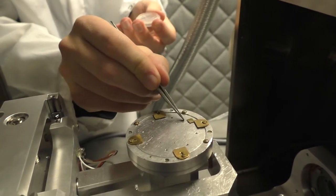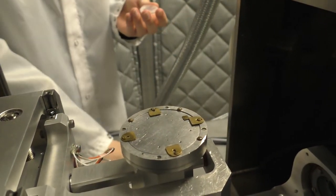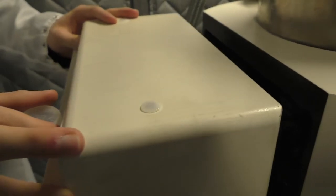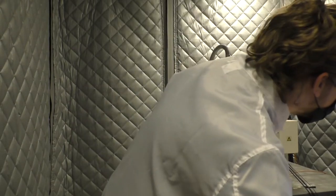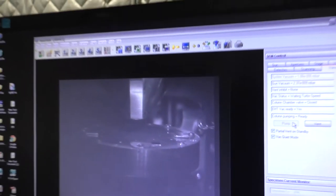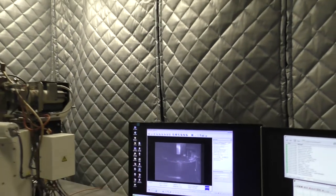The vacuum environment allows the electron beam to travel without scattering with air molecules. Once the sample chamber is in a high vacuum, we turn on a high voltage. This accelerates the electron beam to the sample.